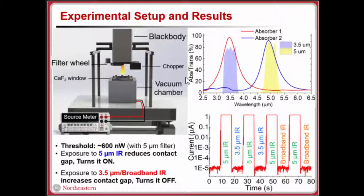Upon exposure to around 600 nanowatts of infrared radiation, we measured that the device turned on. Before that, the device was applied a bias of around 10 millivolts to monitor the current across the device to see if it's on or off.